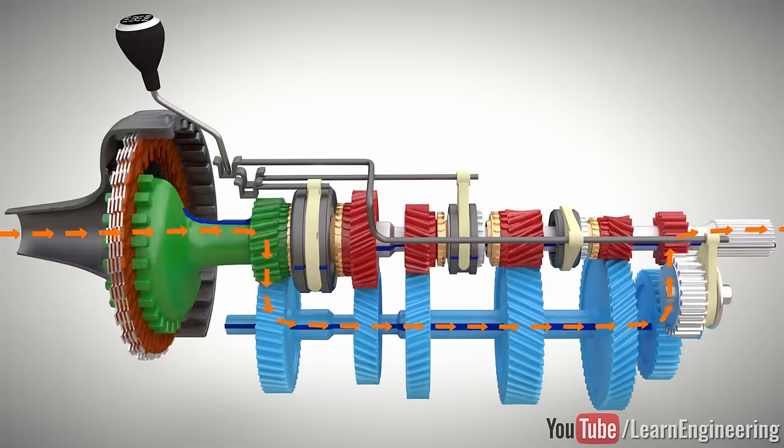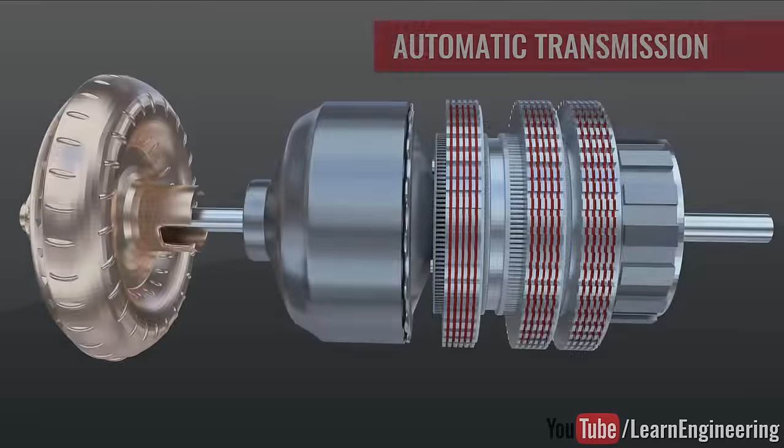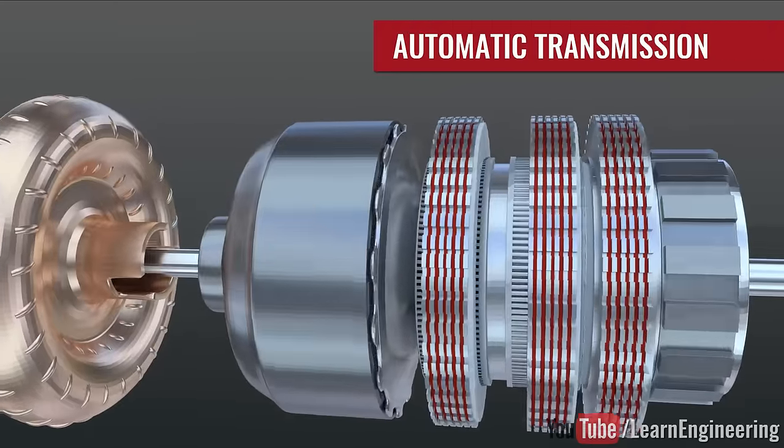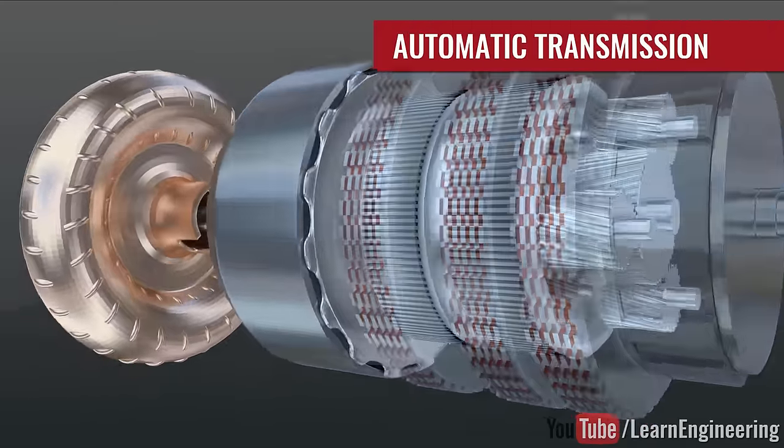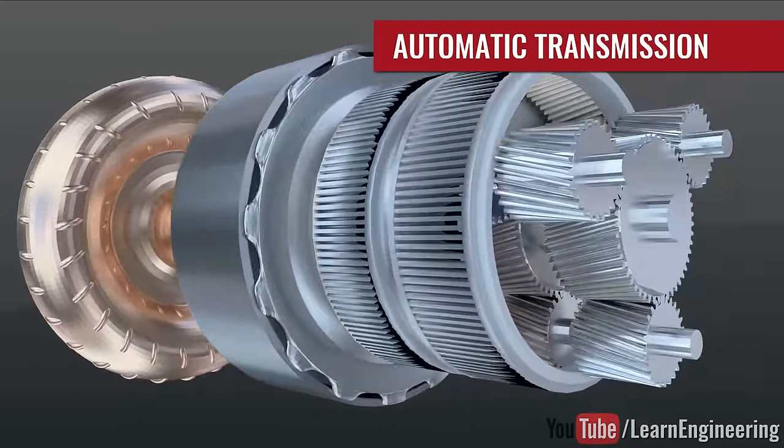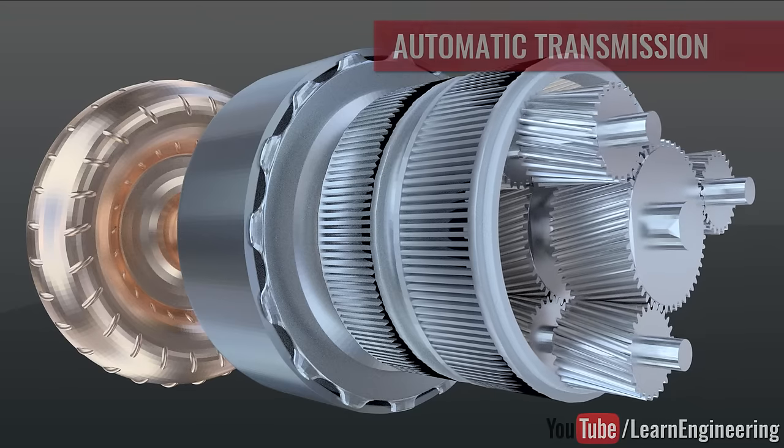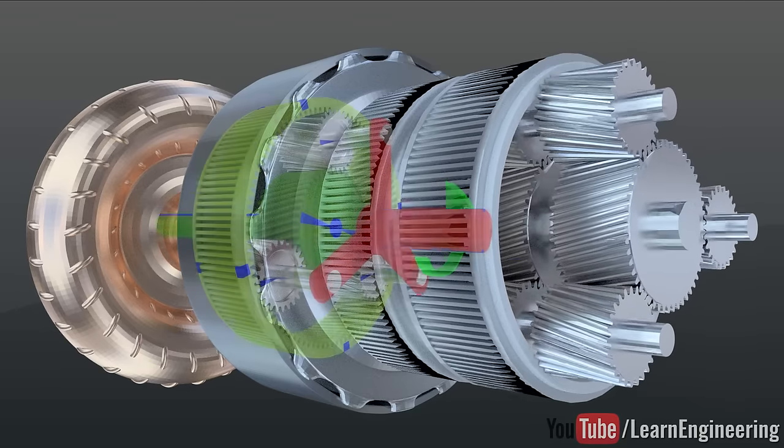Now, let's see how an automatic transmission is different from manual transmission. Automatic transmission was developed to overcome the power discontinuation problem in manual transmission, and it uses a planetary gear set arrangement rather than a simple gear pair.